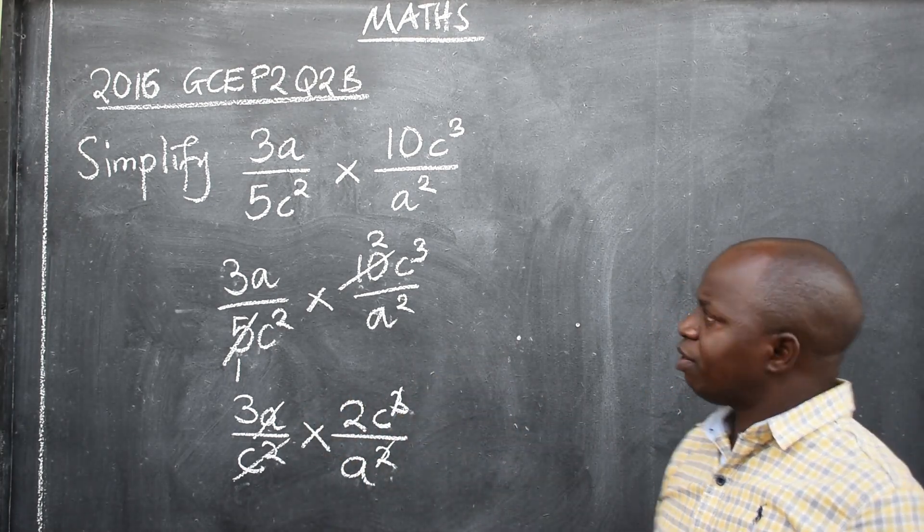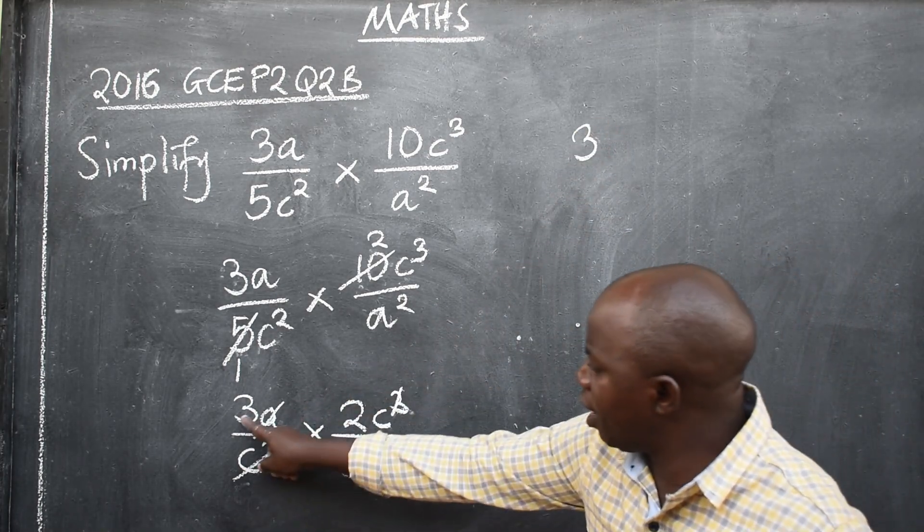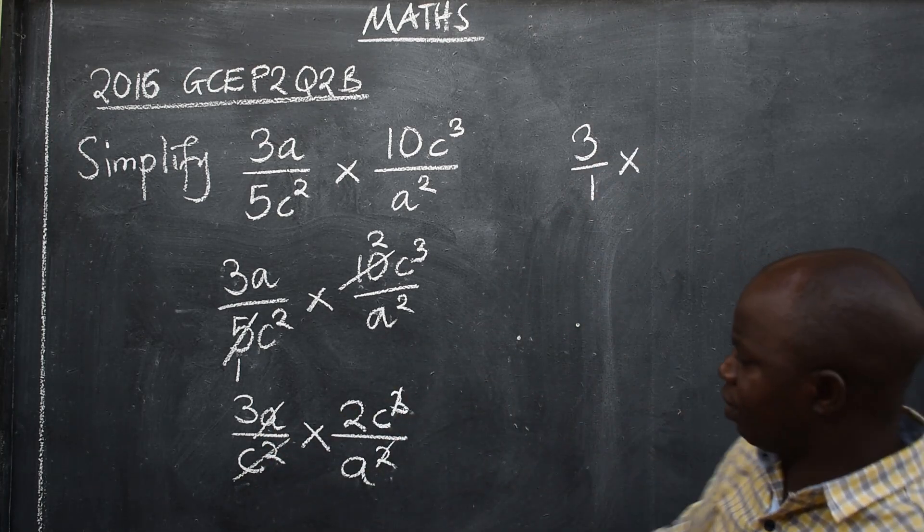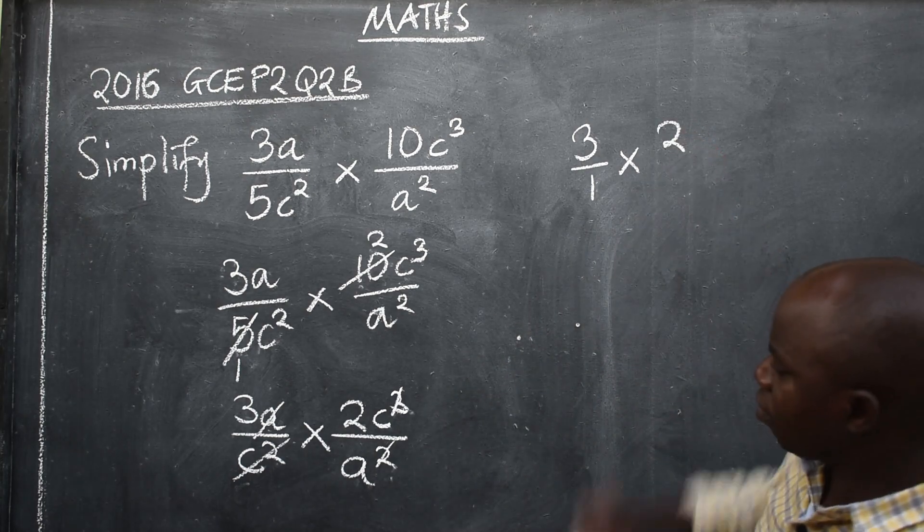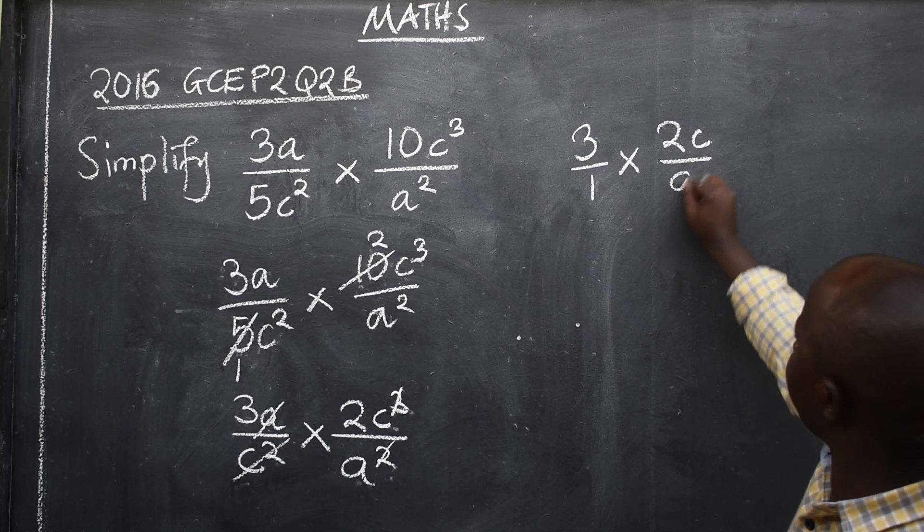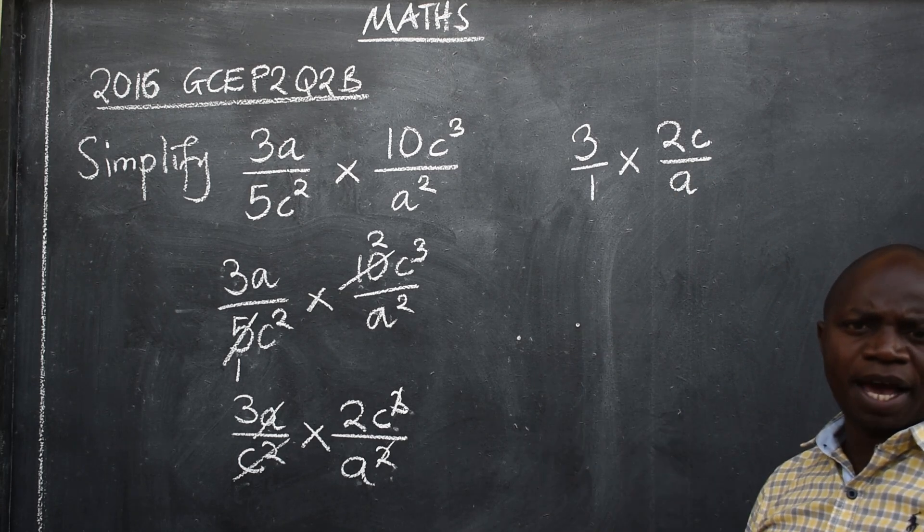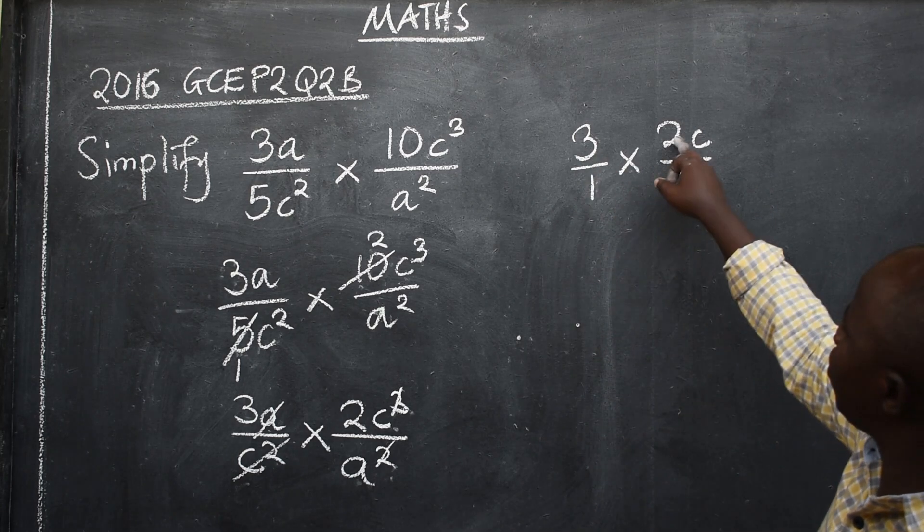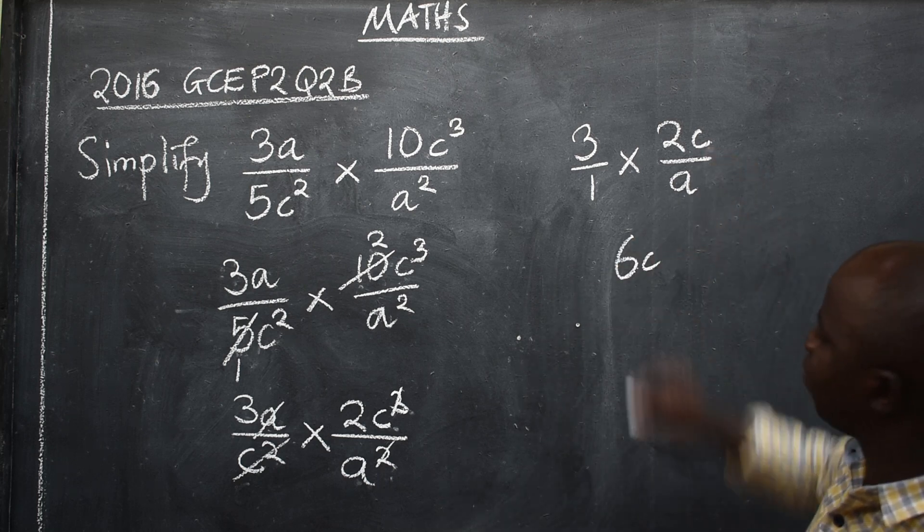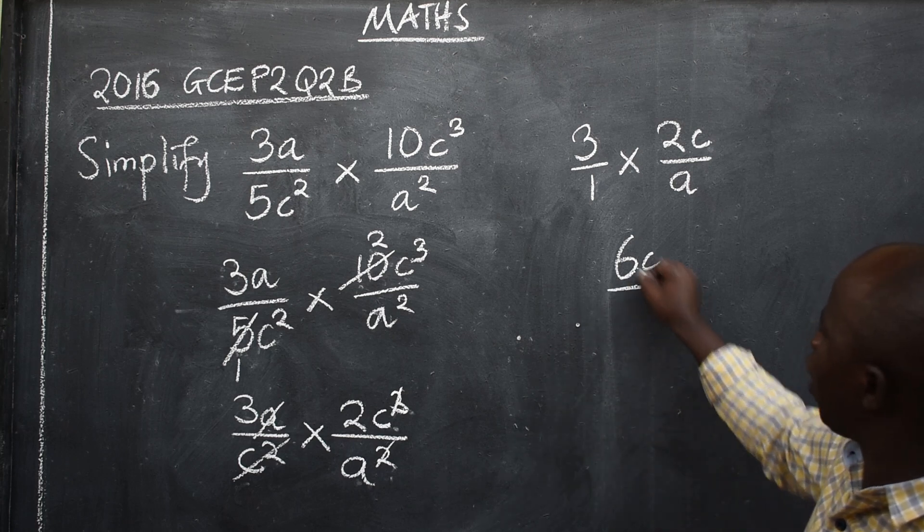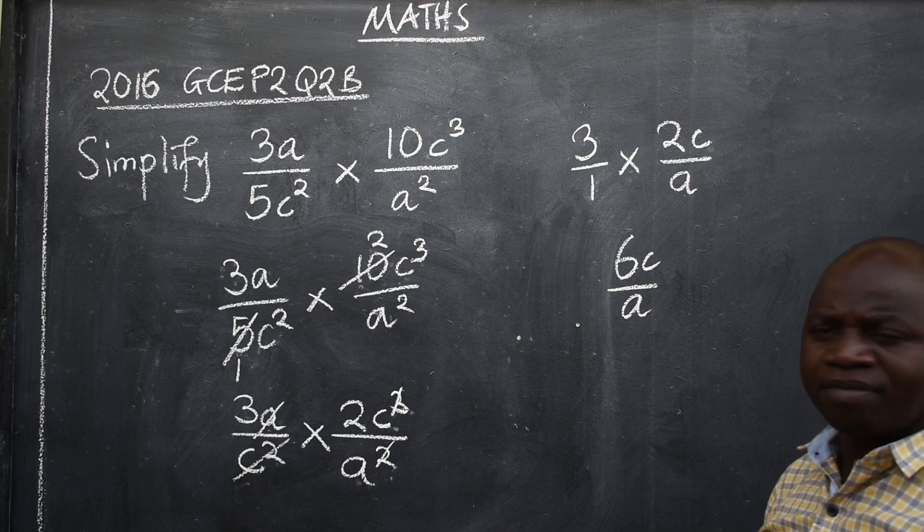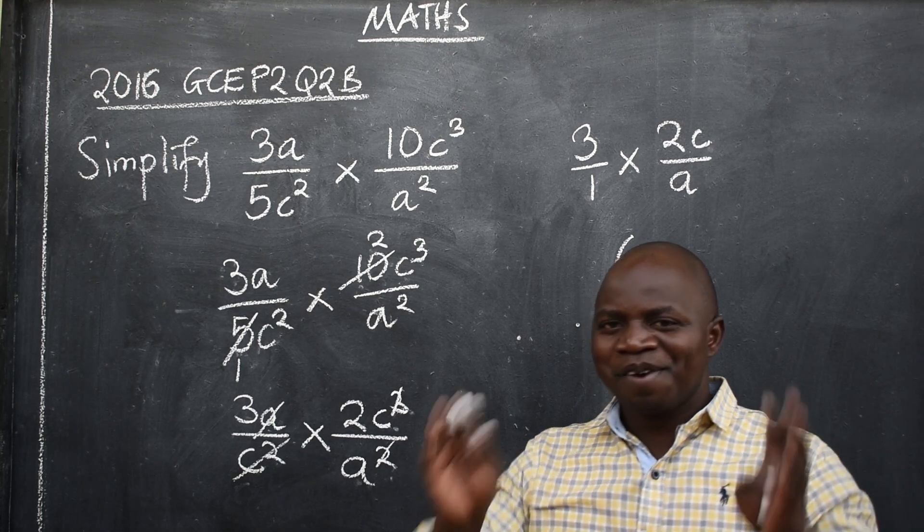Now you are going to copy what has remained. 3 here over. When you cancel here, it means you have remained with 1 times here 2c over here a. Have you seen? Then multiply. What is 3 times 2? 6. There is a c over 1 times a, a. And nothing can be done. We have simplified. Bye-bye.